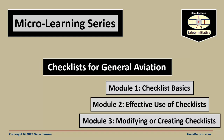Welcome back to our microlearning course about checklists in general aviation. The course consists of three short modules. Hopefully, you have already completed Module 1 on Checklist Basics and Module 2 on the effective use of checklists. This is Module 3, which deals with modifying or creating checklists.